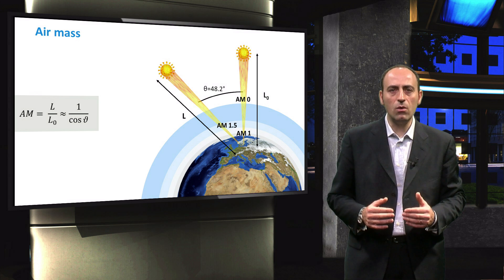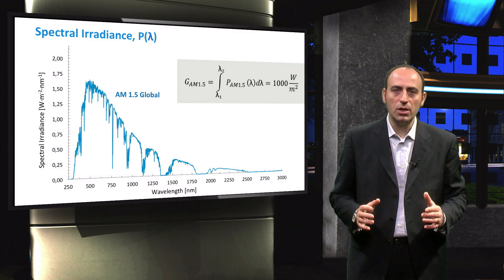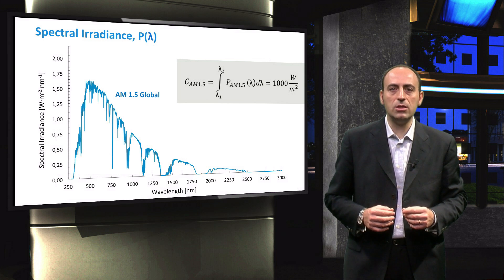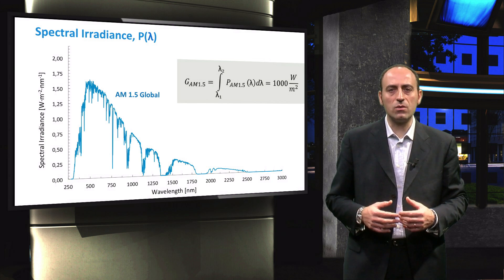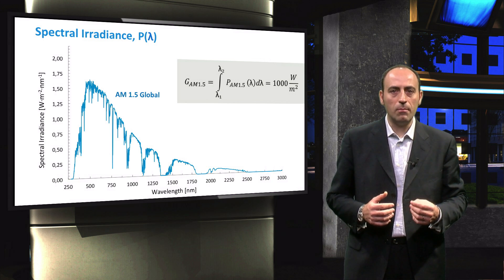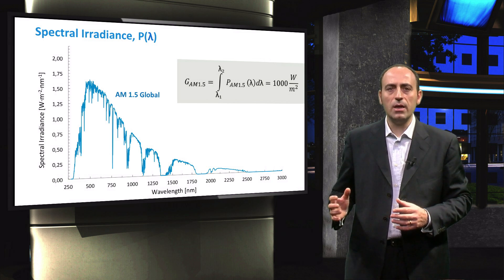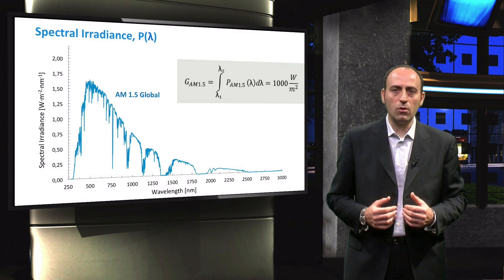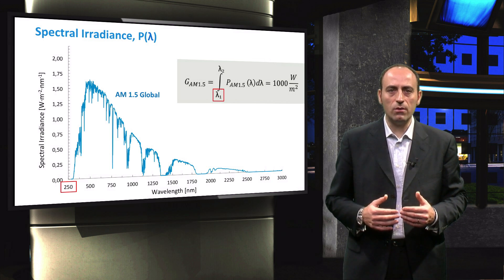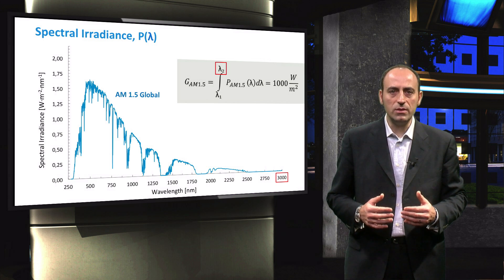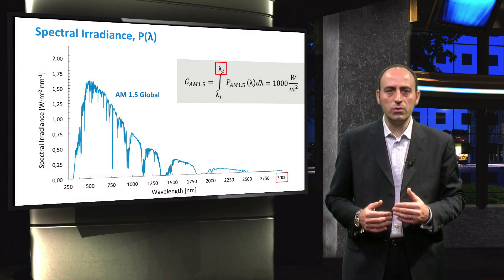When the spectrum is integrated over a certain wavelength range, we obtain the irradiance, which is the power density of light per unit surface. G is the typical letter used to indicate irradiance, and you can come across several subscripts with different meanings, but as long as you see G, it means you have a quantity whose physical unit is watts per square meter. This equation illustrates the integral of the AM1.5 global spectral irradiance. When we consider the entire wavelength interval from 250 nm to the infrared around 3000 nm, the outcome of this integral is 1000 watts per square meter. This number is used to evaluate the performance of solar cells and modules in laboratories and industry.